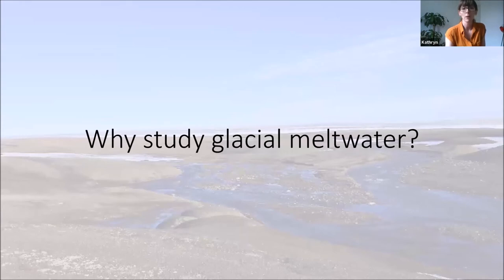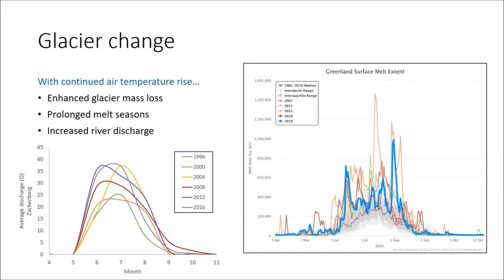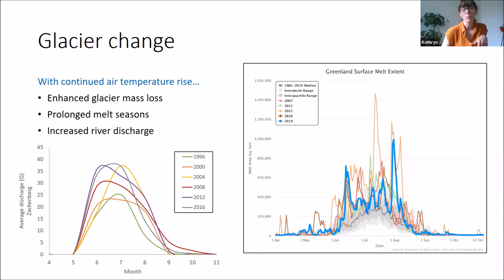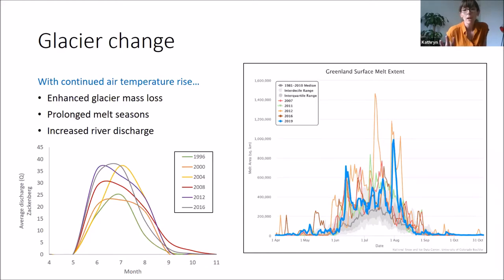So why on earth would we want to go and look at glacial meltwater rivers? As earth scientists we're all quite familiar with the idea of unprecedented air temperature rise, and the Arctic in particular is really feeling the results of this. This graph shows Greenland surface melt extent over the years — the 1981 to 2010 median is in grey, and we move through the years up until 2019. Over time we've seen an increase in the melt area but also an increase in the length of time that melt is occurring in Greenland.